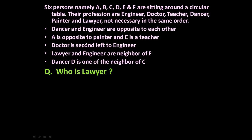Not necessarily in the same order. The given statements are: dancer and engineer are opposite to each other; A is opposite to painter and E is a teacher; doctor is second left to engineer; lawyer and engineer are neighbors of F; dancer D is one of the neighbors of C. So who is the lawyer?